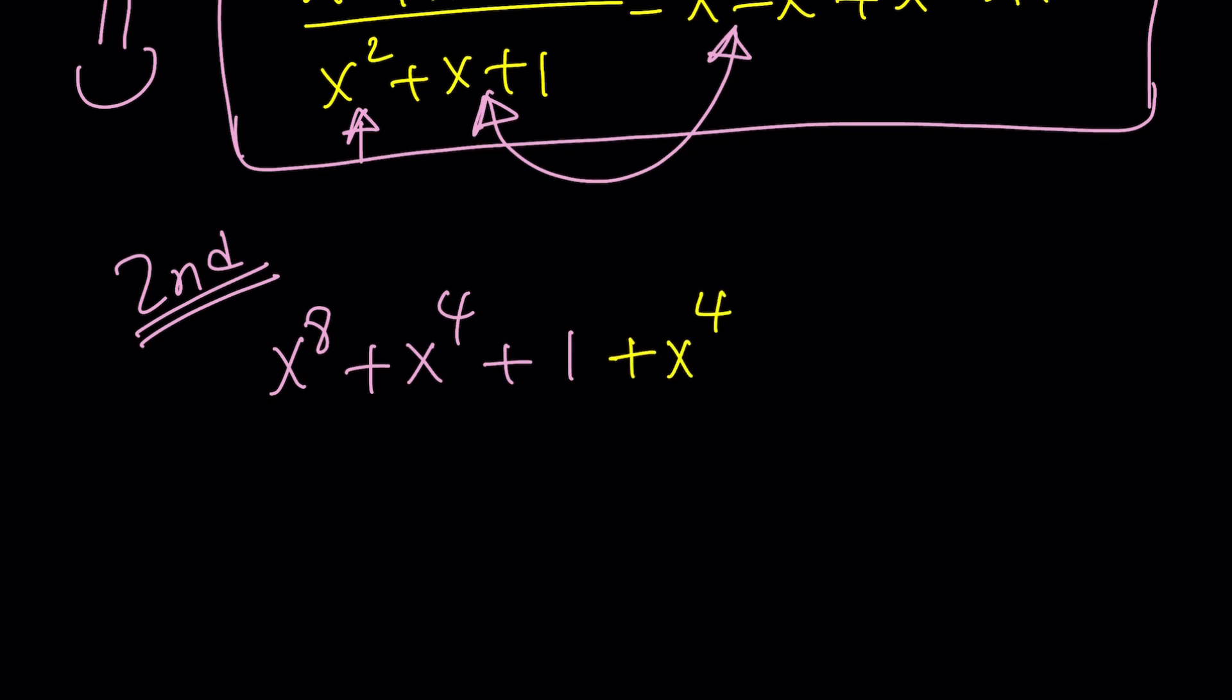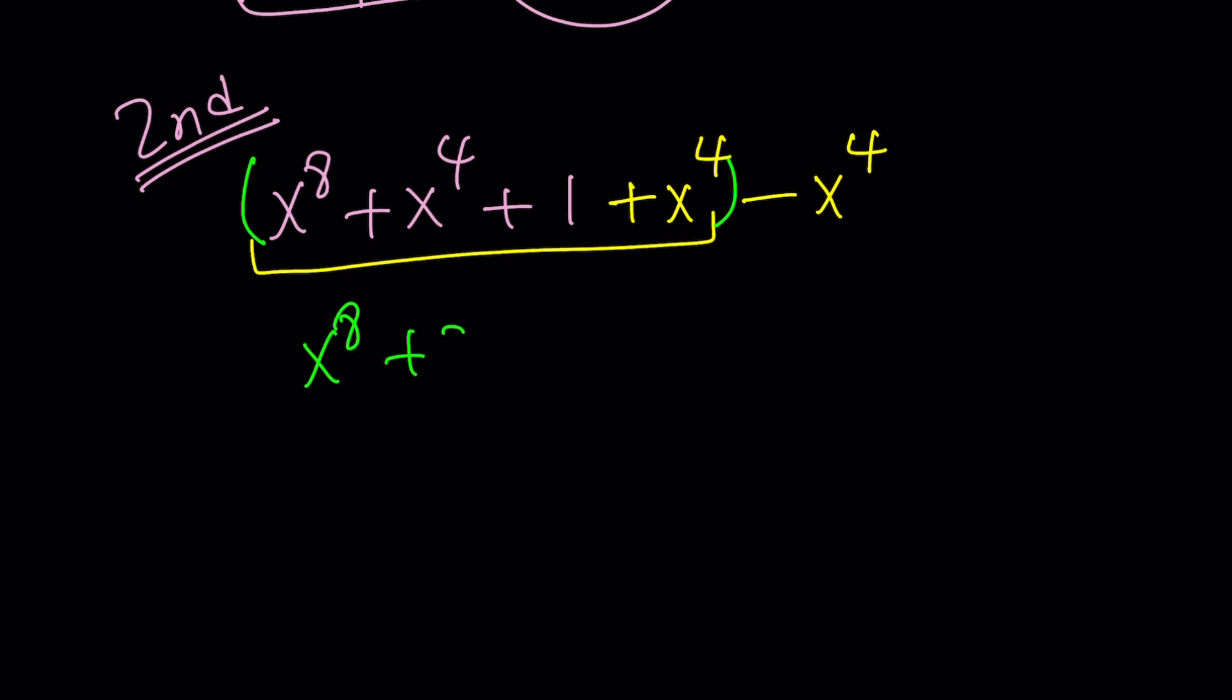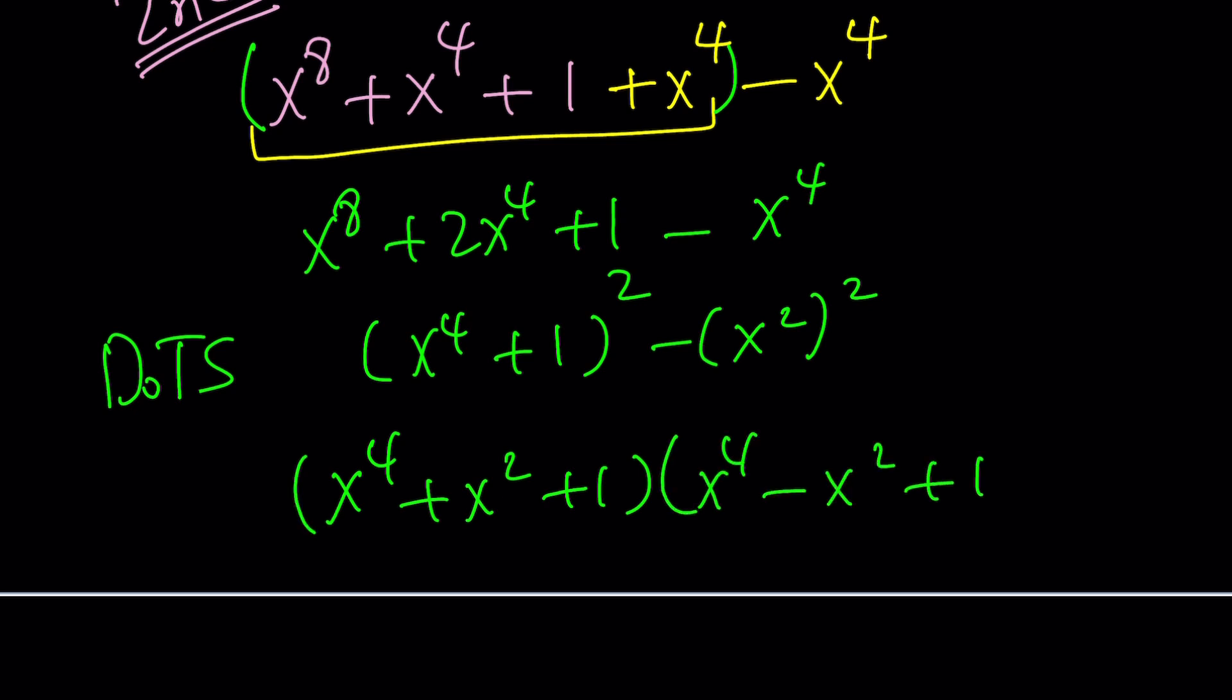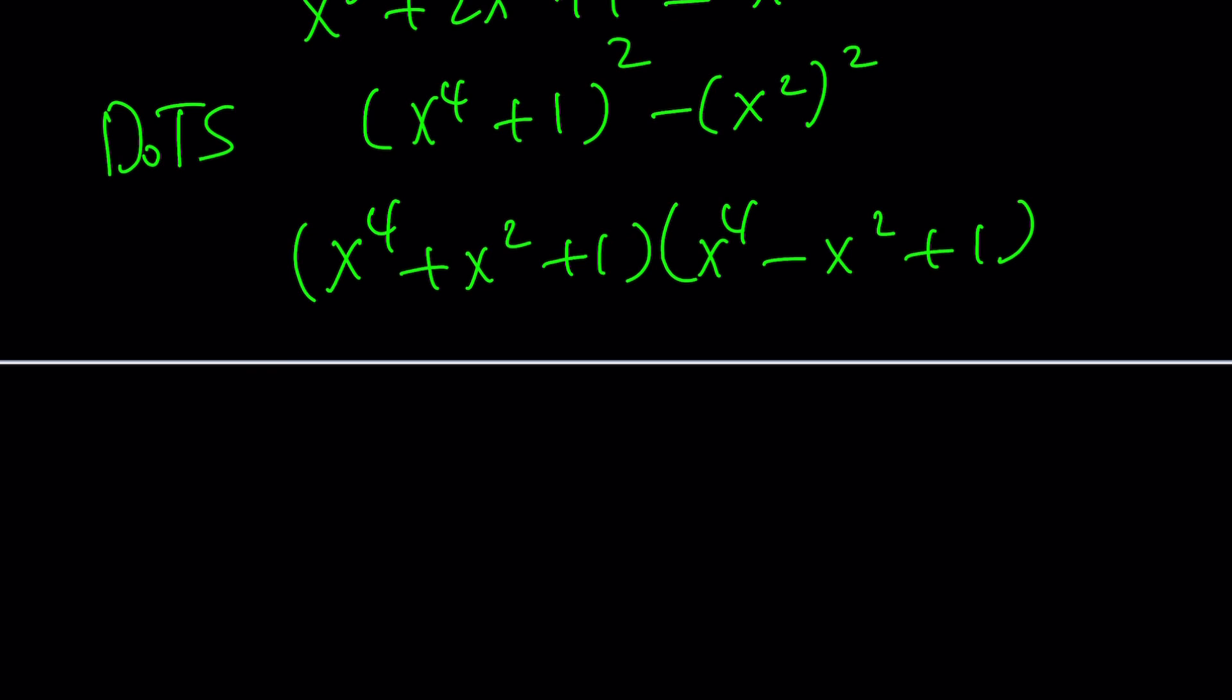And then of course, whatever you add, you have to subtract so you don't really change the equation. Now we have this minus that. And now here's the thing. This is the fun part. x to the eighth plus two x to the fourth plus one minus x to the fourth. Now we can write this as x to the fourth plus one squared minus x squared squared. Awesome. What is this? Difference of two squares. Hopefully you remember that. Now this can be factored as x to the fourth plus x squared plus one. By the way, I switched the order. I wanted to write this in standard form.